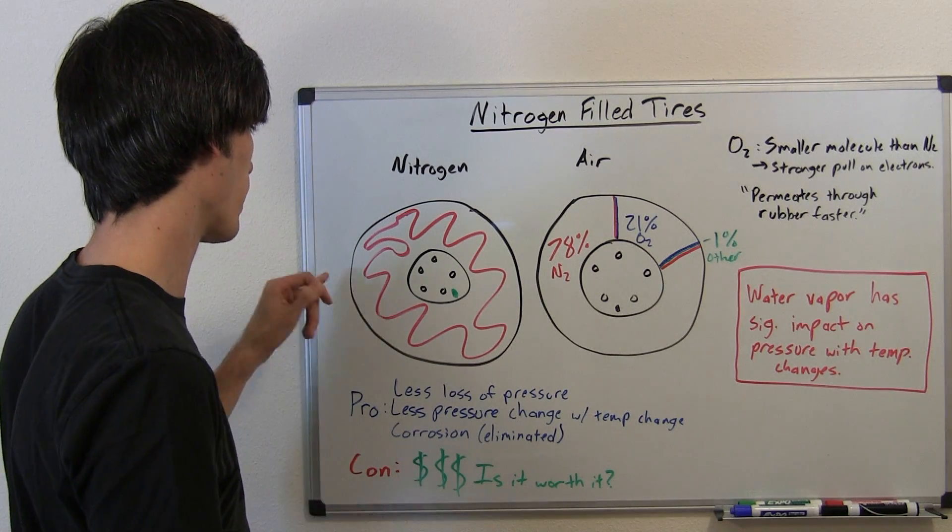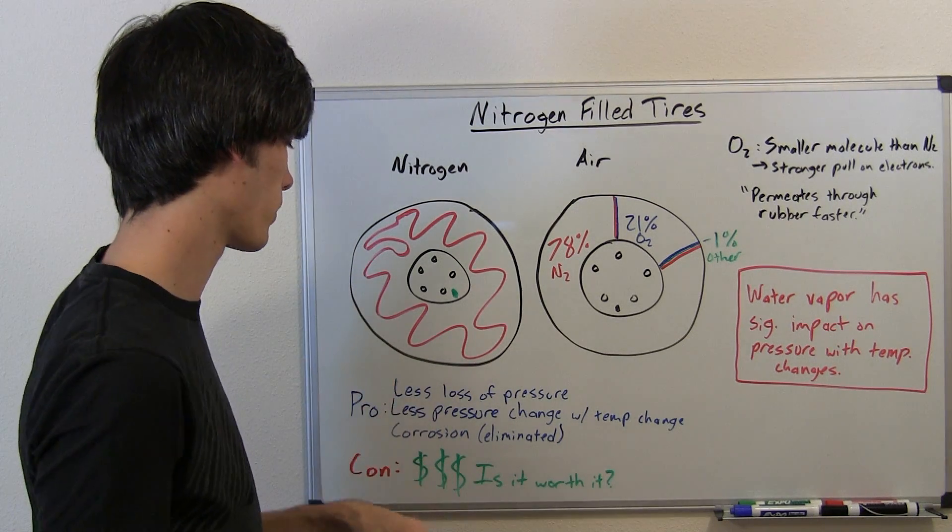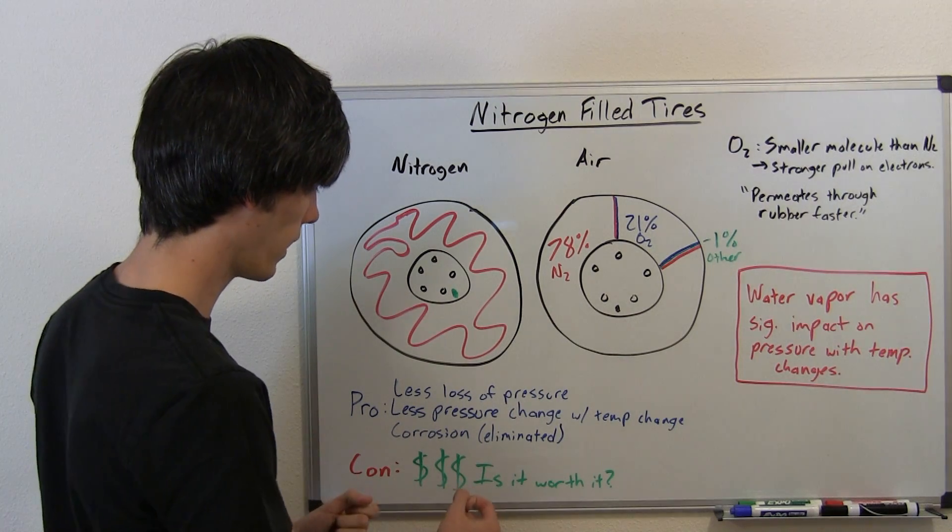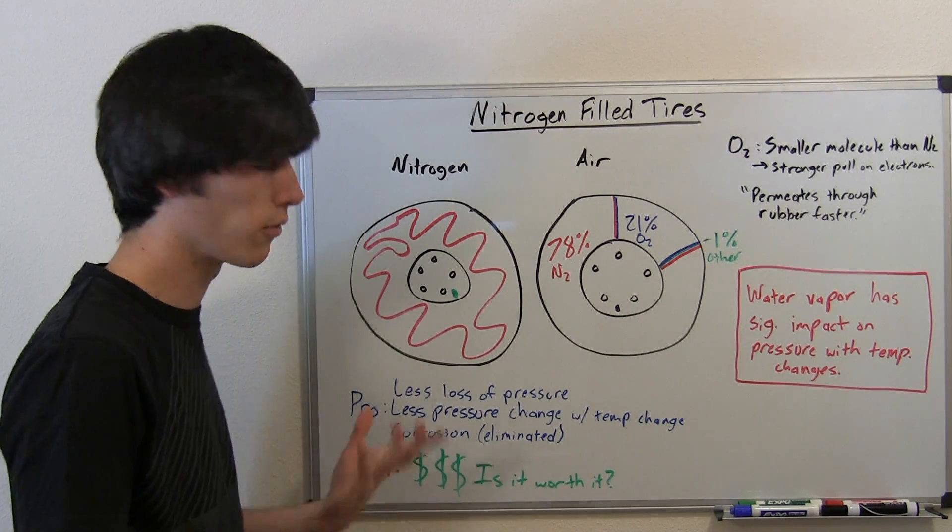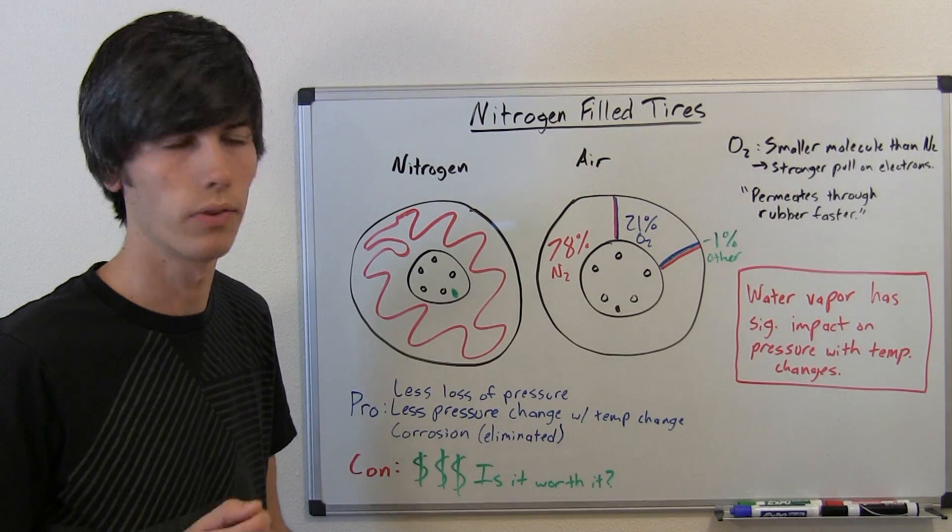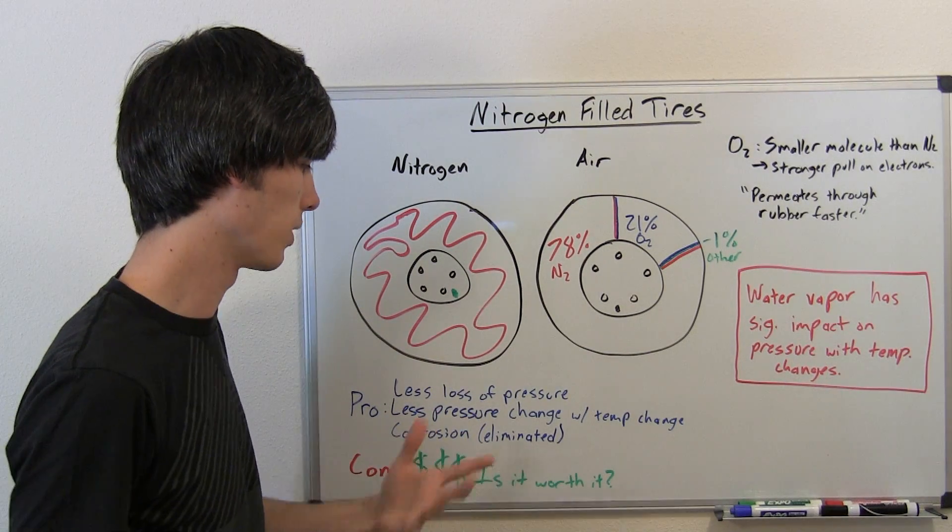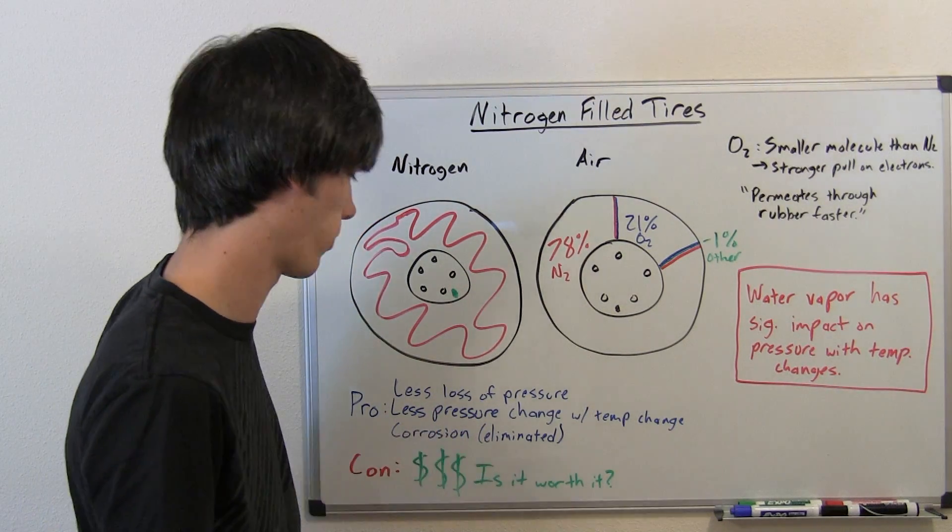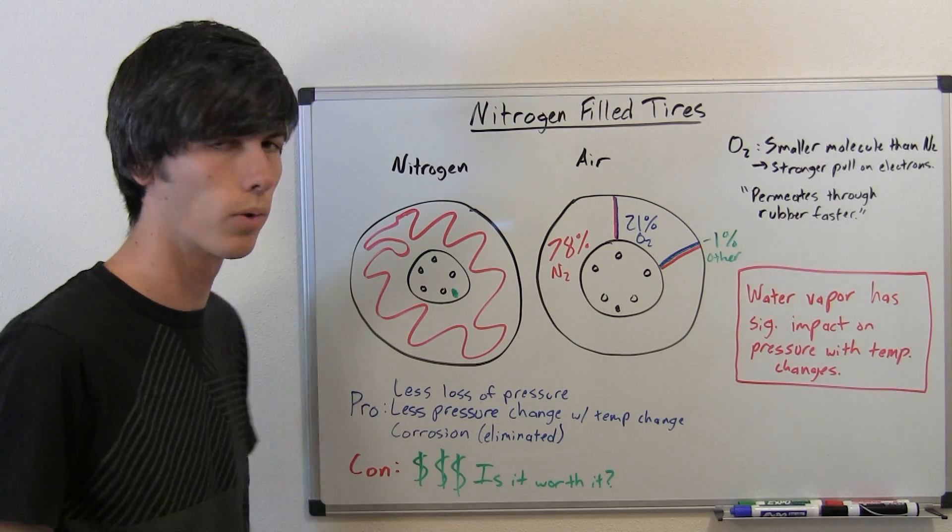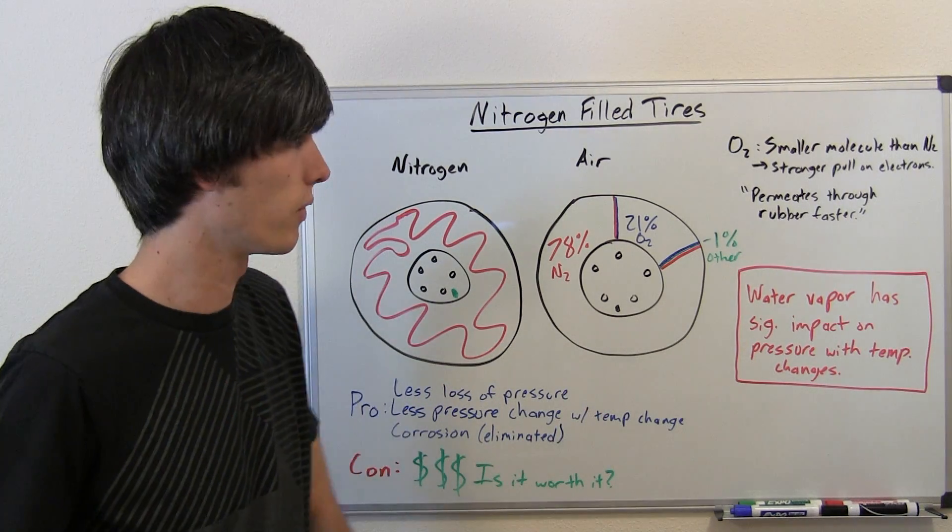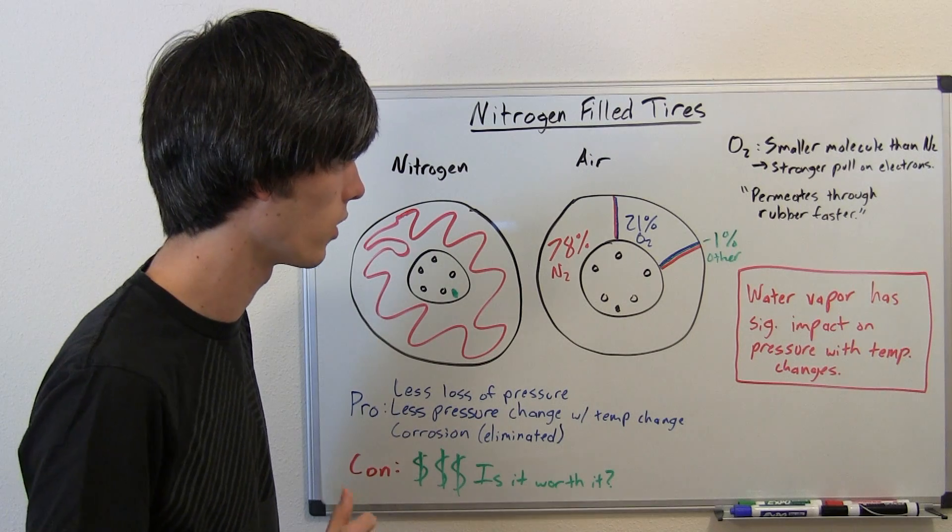So the negative side of nitrogen, great, you don't have the pressure changes like you do with air, but you have to pay more money. I mean, I hear places $5 to $30 just to fill each tire. I mean, it could be less than $30 as high, obviously, but at least $5, and that's still significant where you can buy a bike pump for $15 and fill up all four of your tires.